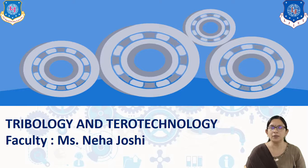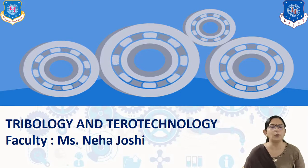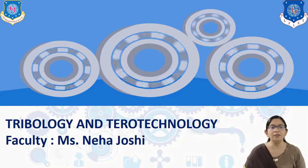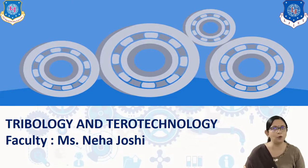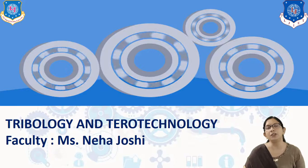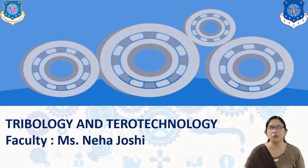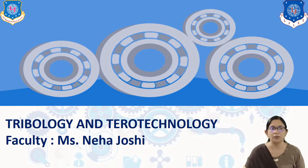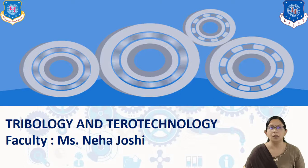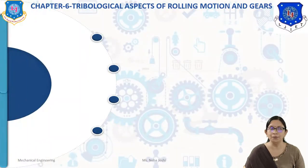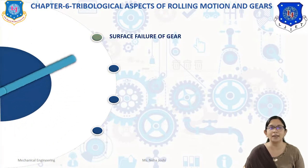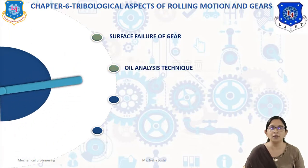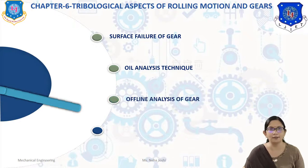Let us continue our sixth chapter, Tribological Aspect of Rolling Motion and Gears. In the previous session we covered what is gear and spur gear, tribology of spur gear, friction and wear of spur gear, and lubrication of spur gear. In today's session we will cover surface failure of gear, oil analysis technique, offline analysis of gear, and online analysis of gear.